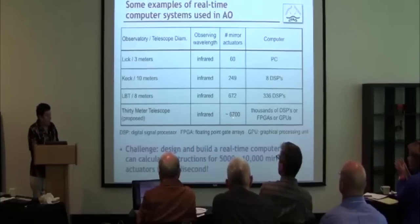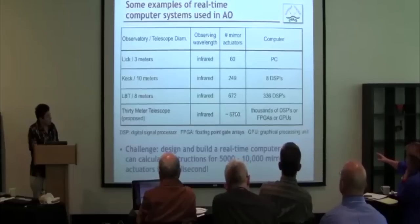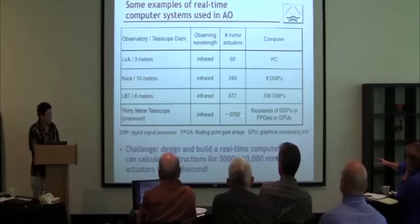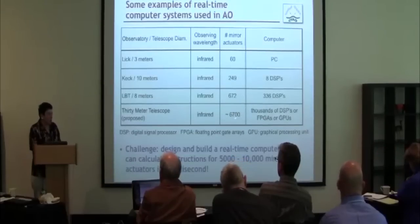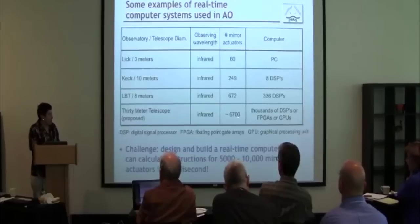For the next-generation systems, we're talking about three mirrors with a total of 6,700 actuators — well past the current 249.